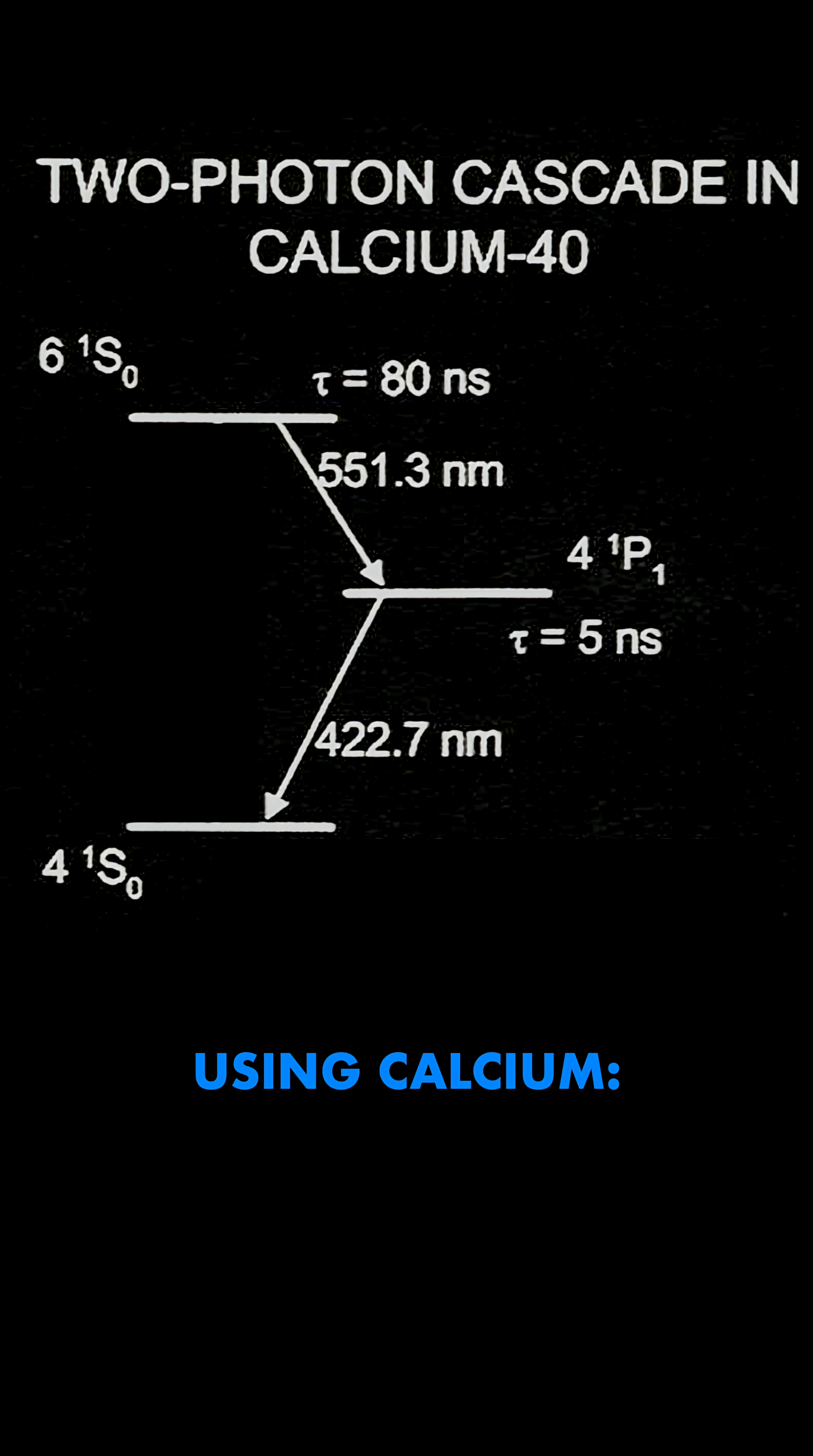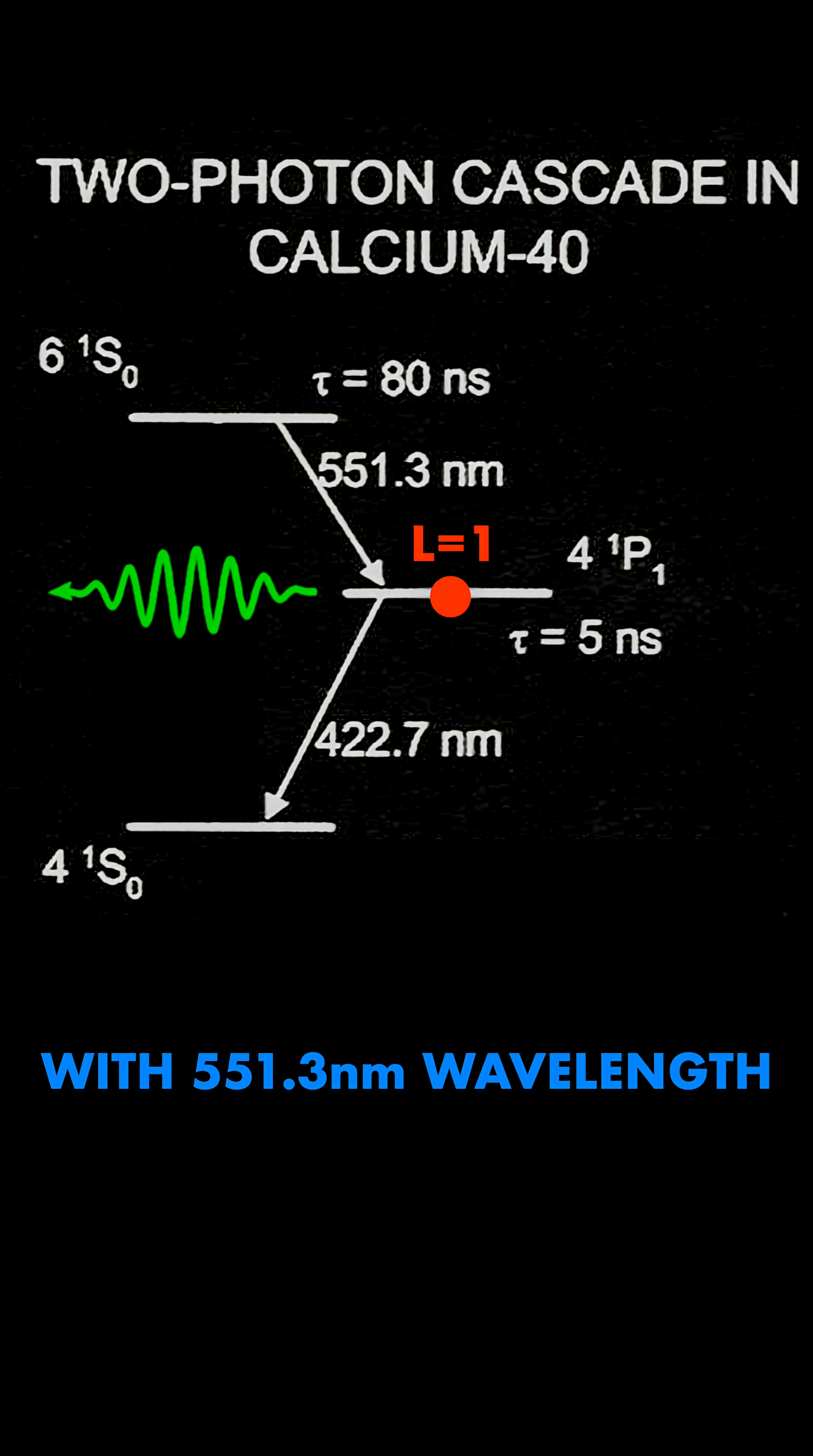This is an example using calcium. We start at the energy state labeled 6s, and from there the atom can go down to the 4p state, emitting a photon with 551.3 nanometer wavelength, which is green, and spin minus one.